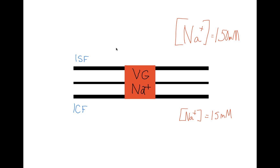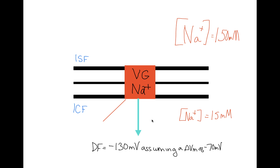Inside our hypothetical cell, we have a voltage-gated ion channel for sodium, or the voltage-gated sodium ion channel. The voltage-gated sodium channel is an ion channel that opens in response to voltage changes in the cell. When this channel opens, sodium will flow down its electrochemical gradient from the outside of the cell to the inside. We can predict this by calculating the driving force. If we assume the membrane potential is around negative 70 millivolts, the driving force on sodium will be around negative 130 millivolts. Since sodium is a cation and the driving force is negative, sodium will flow down its electrochemical gradient into the cell.